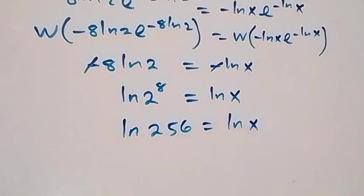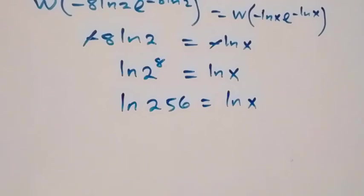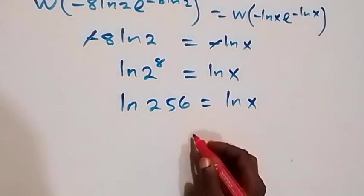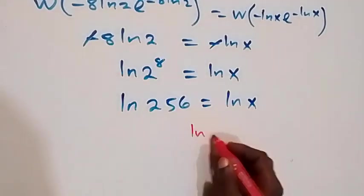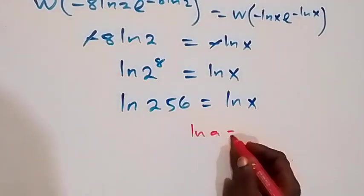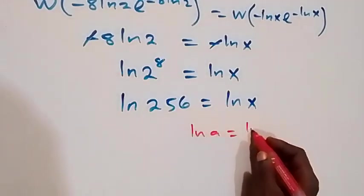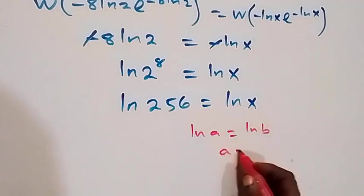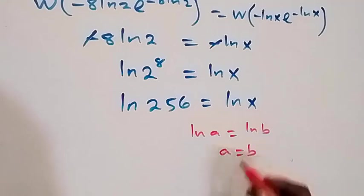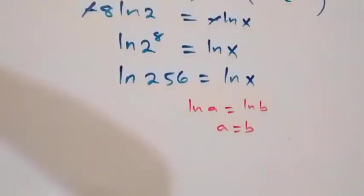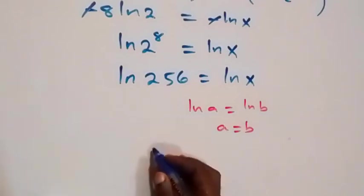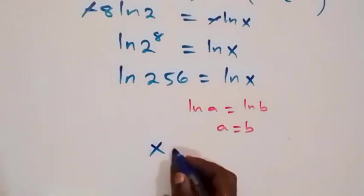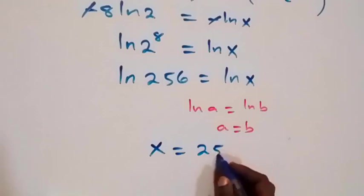Since when we have ln a equals to ln b, we have a equals to b. So therefore we can conclude that x is equal to 256.